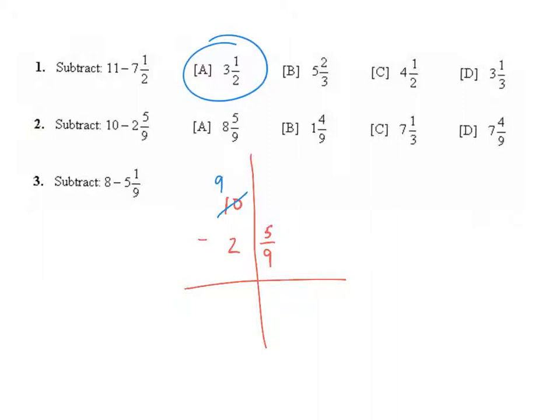This is going to become 9, and the one whole that I took away I'm going to move over to the fraction column. It's going to take the name of the fraction, which is ninths, but it's going to equal one whole, which is 9 ninths. So 9 and 9 ninths is the same thing as 10. Now I'm ready to subtract: 9 ninths minus 5 ninths is 4 ninths, and 9 minus 2 is 7. My answer is 7 and 4 ninths.